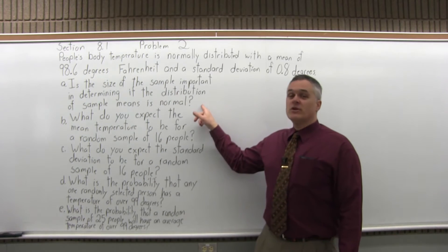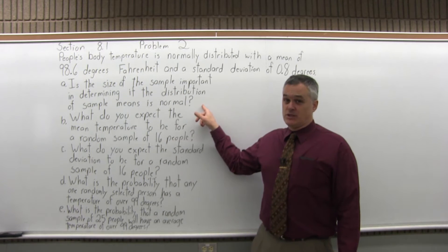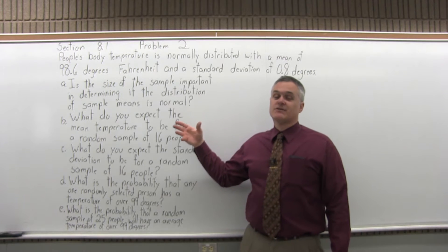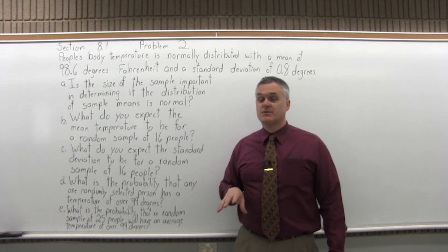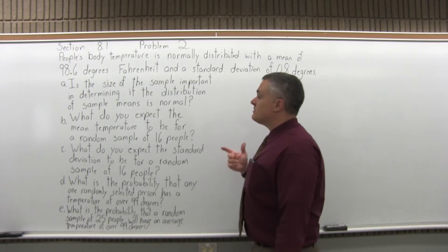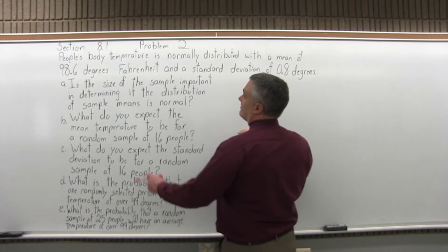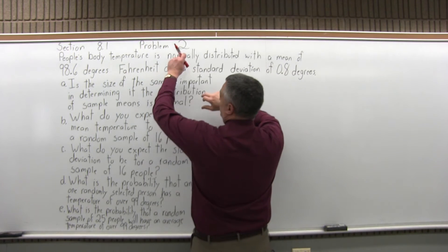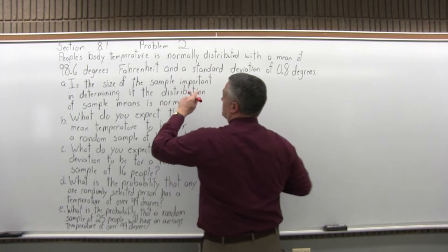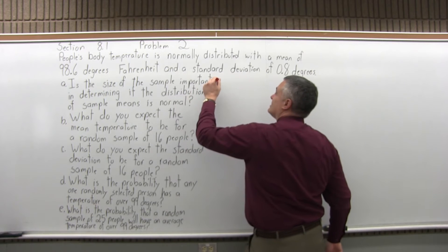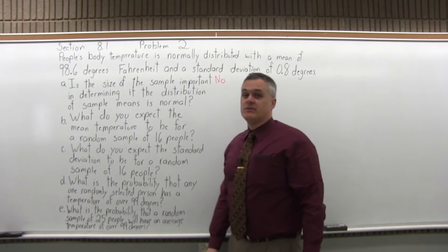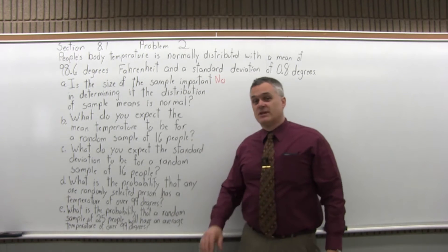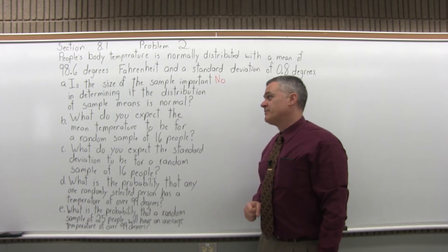If you're not sure whether your population is normally distributed, then you need a sample size of at least 30, and the sample has to be taken randomly. But for this particular problem, because the population is known to be normally distributed, the answer to A is no — the size of the sample is not important in making sure that the distribution of means is normal.